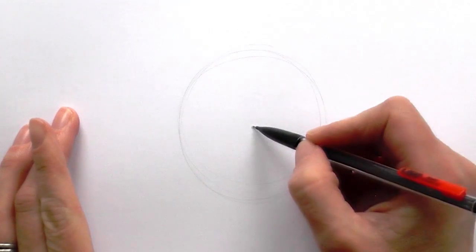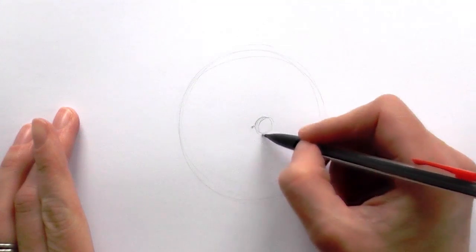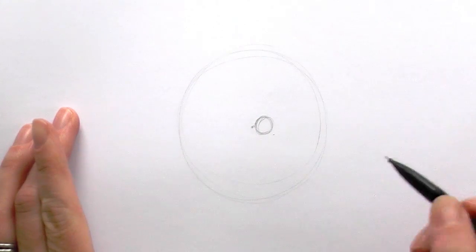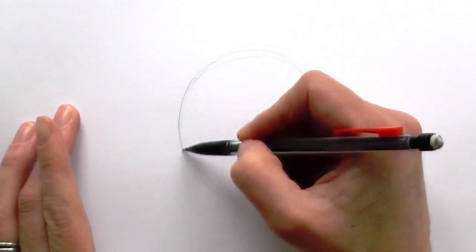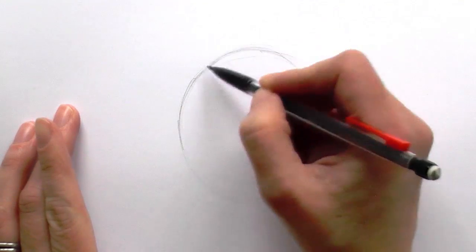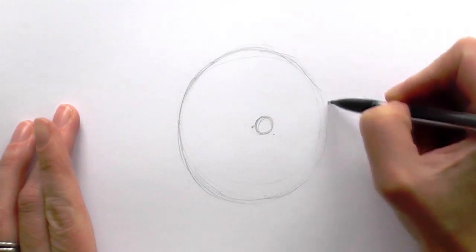Then just find the centre of that circle, which in this case is probably about there, and then draw a little circle just to the side of that. I'm just going to use that as a guide. I'm just going to darken that circle up a little bit, just to make it easier to see.